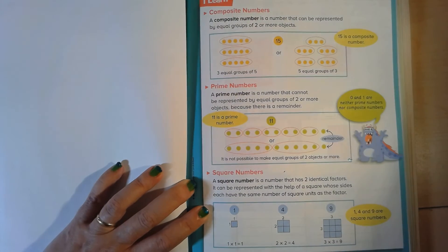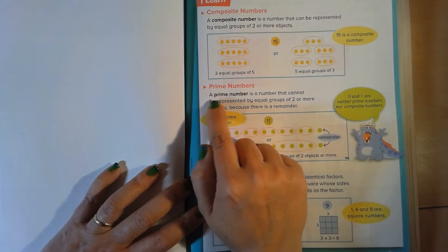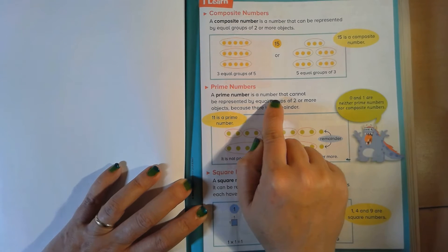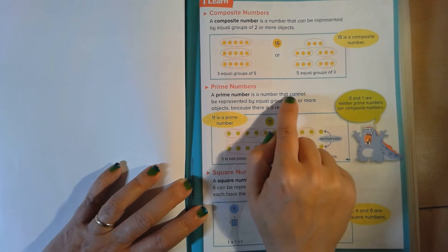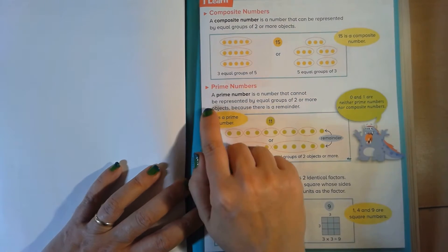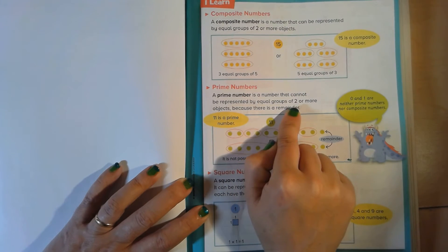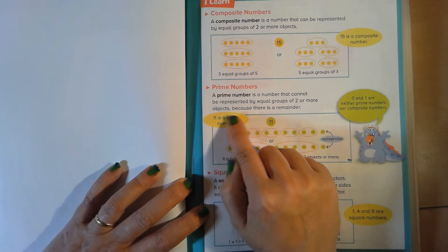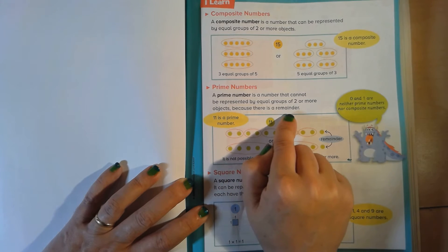What about prime numbers? What's a prime number? A prime number is a number that cannot — and that's important — cannot be represented by equal groups of two or more objects because there is a remainder.